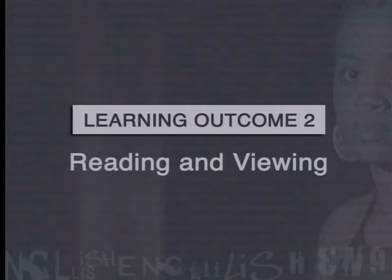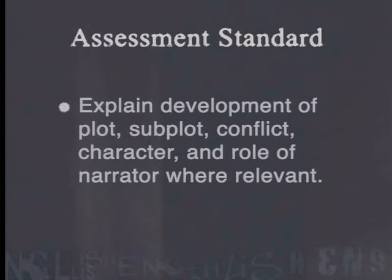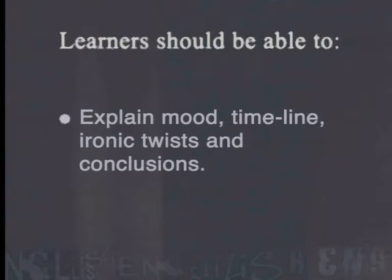The following lesson is linked to Learning Outcome 2, Reading and Viewing, and addresses the assessment standard that requires learners to explain development of plot, subplot, conflict, character, and role of narrator where relevant. Learners should also be able to explain mood, timeline, ironic twists, and conclusions.